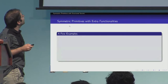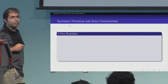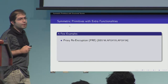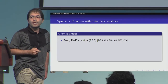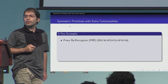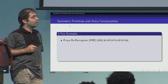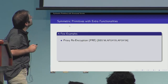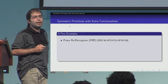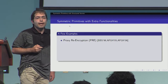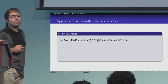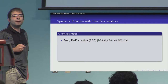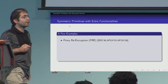Let's see a couple of examples of such primitives. Maybe the oldest example is proxy re-encryption, which has been considered in both the symmetric and asymmetric setting. Proxy re-encryption was proposed by Blaze et al. in 1998, and subsequent works showed improved versions of this primitive both in terms of efficiency and security.